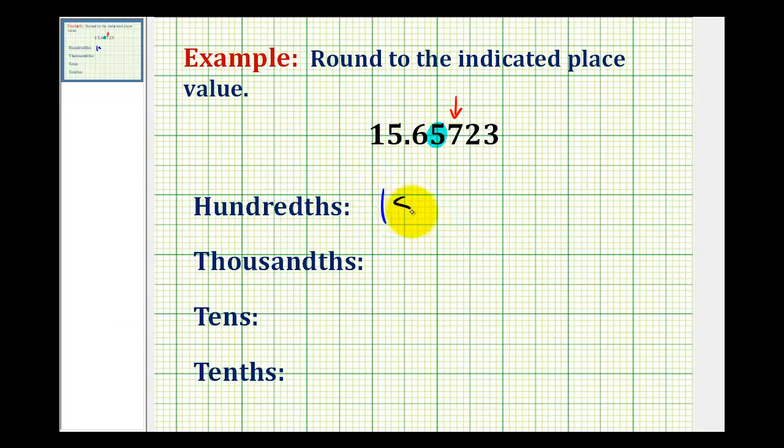So we'll have fifteen point six six. And it is important that we do not include extra zeros here on the end because it would indicate that we rounded to a different place value. So we have fifteen and sixty-six hundredths as our rounded value.